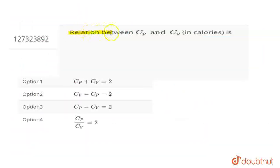The question asks for the relation between CP and CV in calories. We need to find the correct answer from the given options. This involves the relation between CP and CV at constant volume.